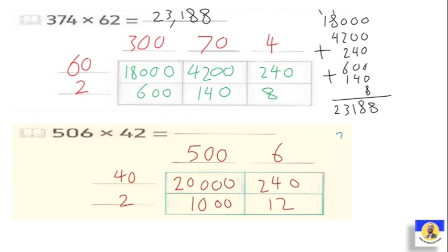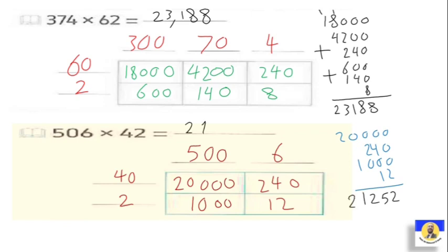Then we start to make plus. We have twenty thousand, then two hundred forty. Important: make sure ones under ones, tens under tens, hundreds under hundreds — this is very important. So: here it's two, here it's five, then two, then one, then two. So the answer will be twenty-one thousand two hundred fifty-two.